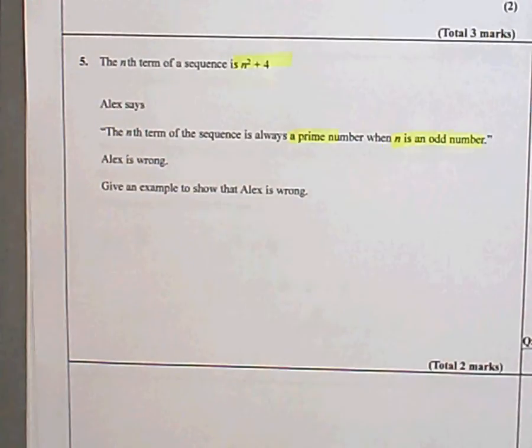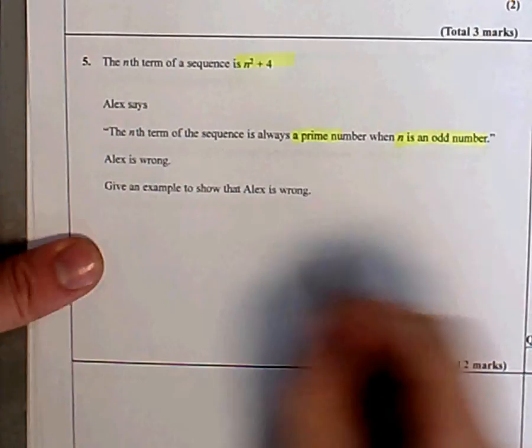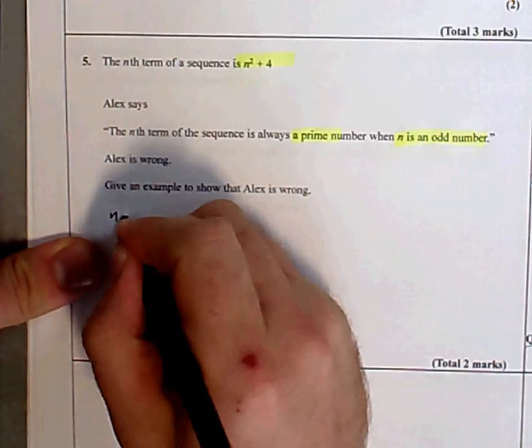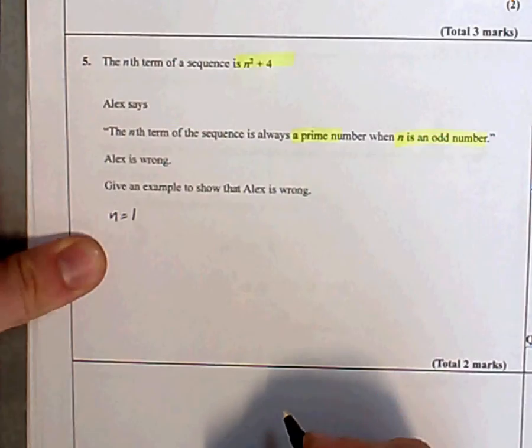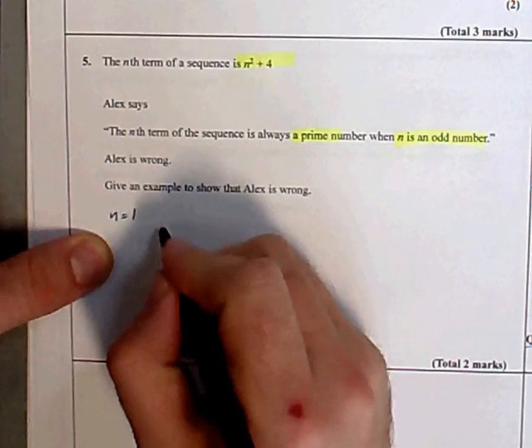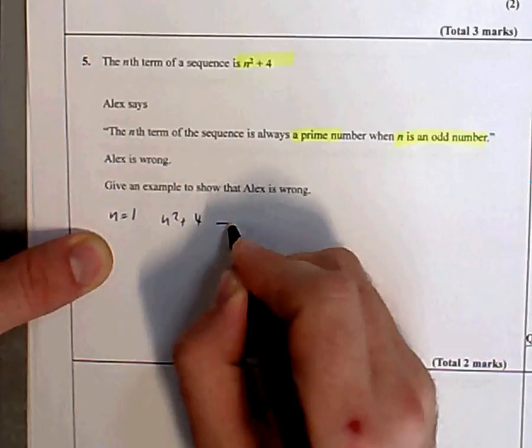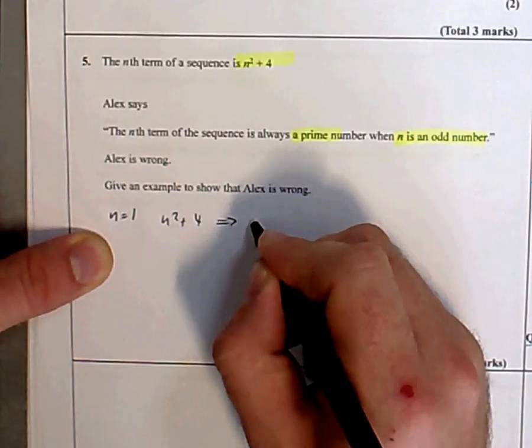If you don't agree with Alex, they're telling you he's wrong, so show he's wrong. I'm going to put different odd numbers into this formula. I'm going to start with n equals 1, and substitute it into n squared plus 4.